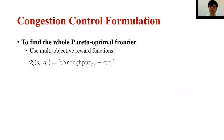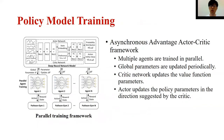The reward function is defined as a vector of two components — throughput and negative RTT — corresponding to the two objectives of congestion control. To train the MORL agent efficiently, we adopt a synchronous advantage actor-critic framework. Multiple agents are trained in parallel while global parameters are updated periodically. The actor network and the critic network share three neural network layers. The critic network updates the value function parameters and the actor updates the policy parameters in the direction suggested by the critic network.